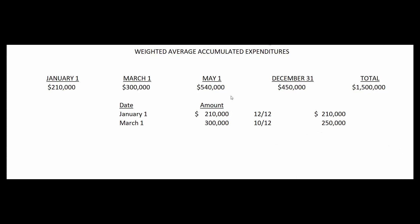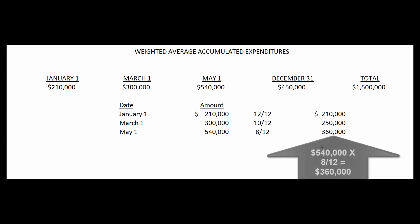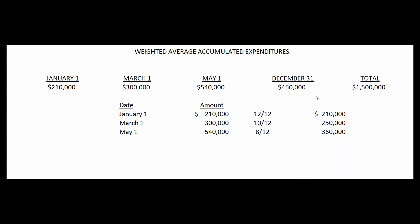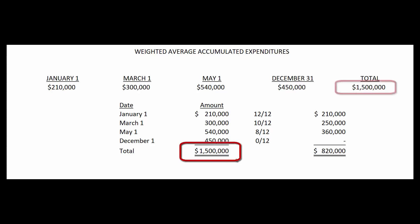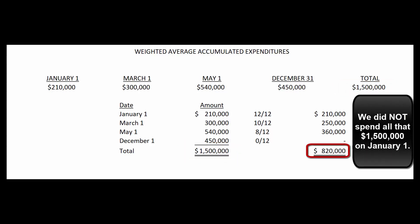On May 1st, we cut a check for $540,000. We effectively borrowed that money for 8 months (May through December): 8/12 × $540,000 = $360,000. The final payment on December 31st was $450,000, but we don't owe any interest on the day we borrow the money, so it's 0/12 × $450,000 = $0. Adding all four together accounts for the full $1.5 million spent, giving us a weighted average accumulated expenditure of $820,000.